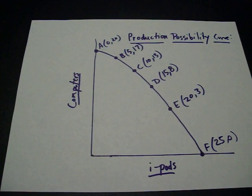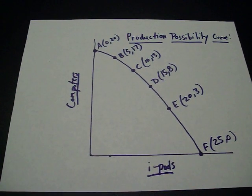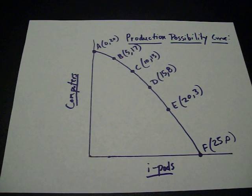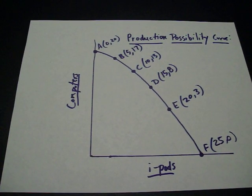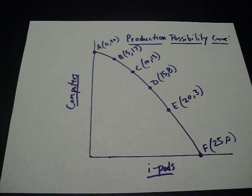So the line that we've created shows the different possibilities of what we can make. This shows the maximum that we can produce. That means if we're as efficient as possible we can produce any one of these points on the line.